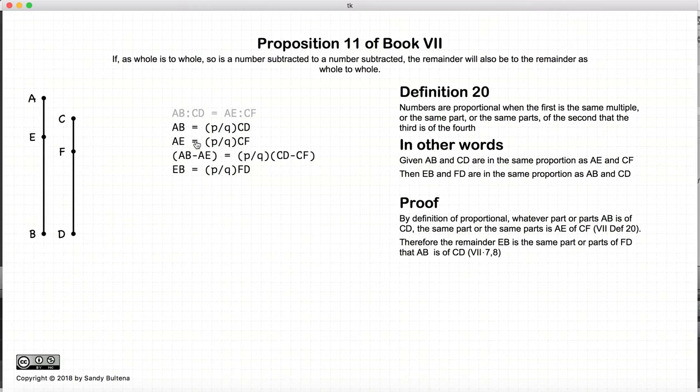And we know from propositions 7 and 8 that we can subtract AE from AB, CF from CD, and it will still be, the results will still be the same fractions. So EB is the same fractions of FD as AB is of CD.